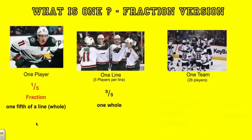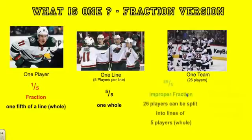Zach Parisi is one-fifth of the team when he's out playing on the ice, and one-fifth of that line would be the fraction. And finally, of the entire team, we're looking at the players on the bench and the subs. So if there are 26 players on the team, we want to figure out how many lines we could make with those 26 players.